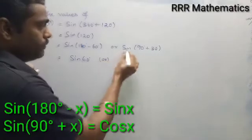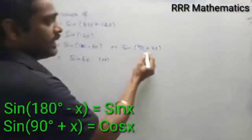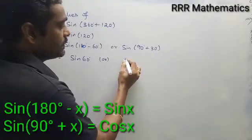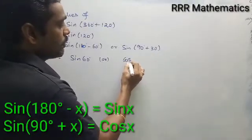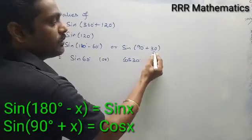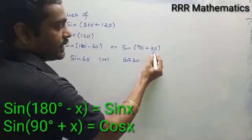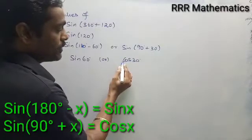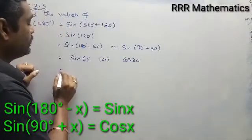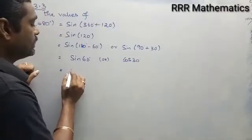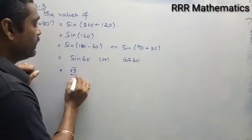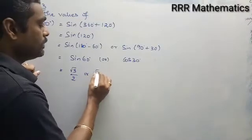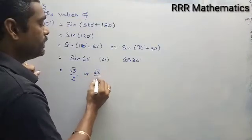For sin(90 plus 30), with 90 plus theta the function changes to cos 30. Since 90 plus theta lies in the second quadrant, and in the second quadrant sin is positive, the result is positive. Sin 60 equals root 3 by 2, and cos 30 also equals root 3 by 2.